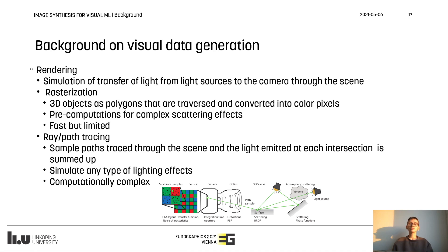On the other hand, in path tracing, sample paths are stochastically generated in the image plane and traced through the scene. At each interaction, the light-emitting objects are sampled and their contribution is summed up. Path tracing is therefore extremely general and can simulate any type of lighting effects, including multiple light bounces, combinations between complex geometries and material scattering behaviors, and a wide range of sensors without the need for precomputations. The drawback is that it is computationally expensive, but at the same time it parallelizes and scales well, and is feasible through Monte Carlo importance sampling techniques and efficient data structures for accelerating geometric computations.